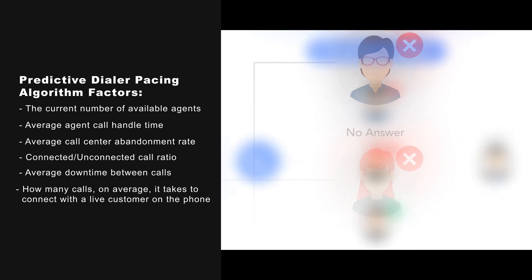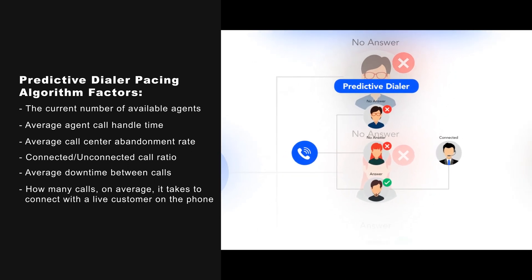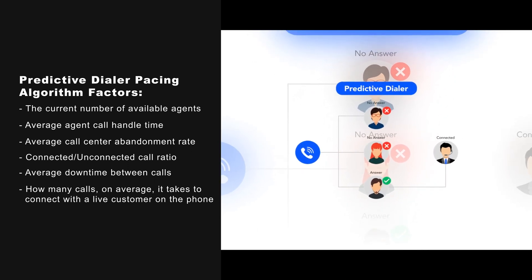This includes how many calls on average it takes to connect with a live customer on the phone. In addition to automatic algorithm adjustments, admins — and sometimes agents — can manually adjust the outbound dialing speed, which helps to reduce agent burnout and ensure compliance with TCPA, or Telephone Consumer Protection Act, regulations.